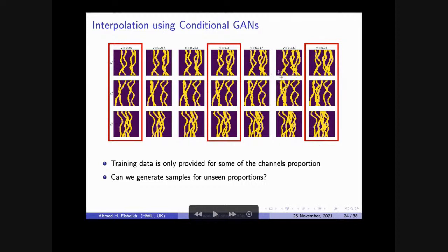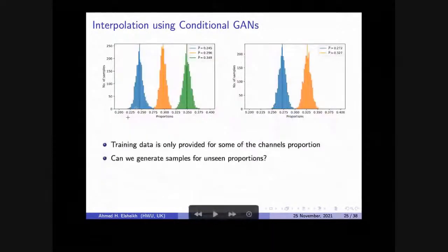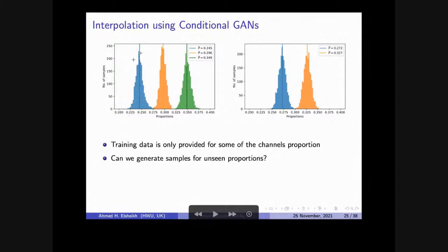We successfully, through a set of tricks, managed to train the GAN to be a good interpolator. When we assessed this using standard deviation, we generated a couple thousand samples for condition 0.25 and found the mean is indeed 0.25. For 0.3 it is 0.3, for 0.35 it is 0.35. These are seen conditions. The unseen conditions in between show slightly larger errors — because we cannot have perfect interpolation. It is like a Gaussian process regression: the more you move from your training data, the errors and uncertainty get larger.